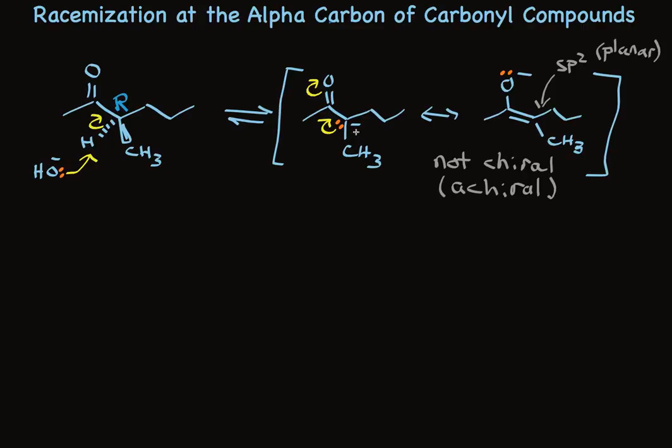If it happens from the back, we get the stereoisomer that we have here, the R configuration. If that protonation happens from the front, we get the S configuration. We have turned a single stereoisomer into a pair of enantiomers. They are a pair of enantiomers. They are equal stability.